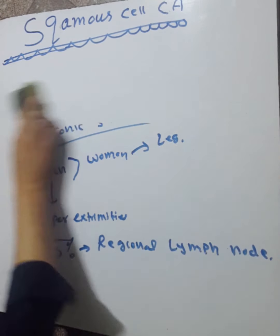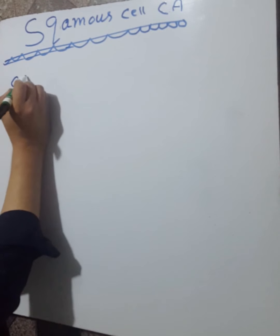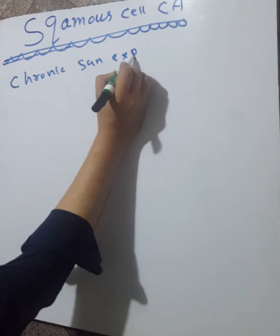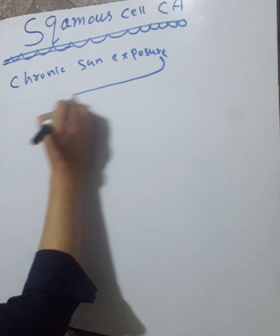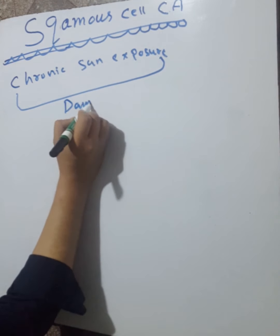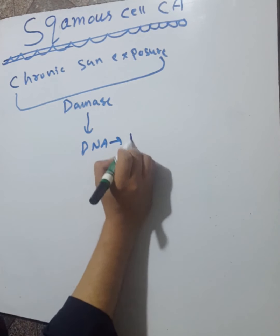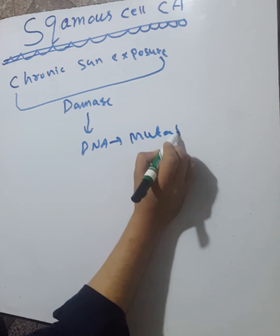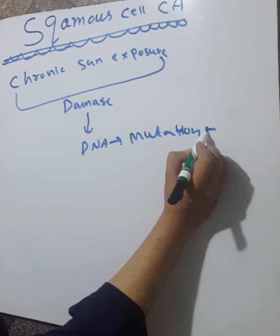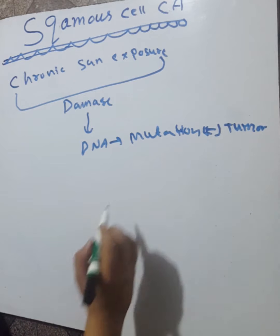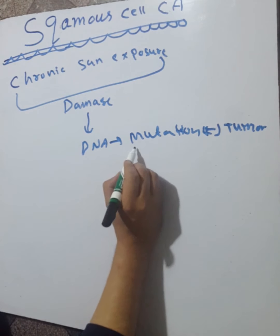The pathogenesis of squamous cell carcinoma begins with chronic sun exposure, which damages the DNA. This DNA damage causes mutations in certain genes that suppress the tumor, producing abnormal proteins.